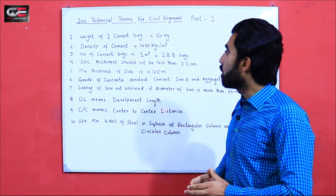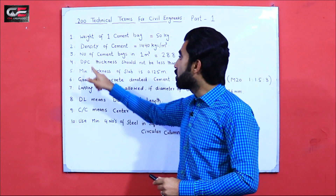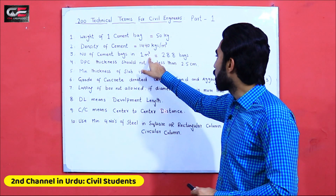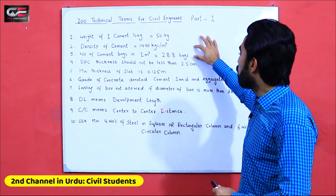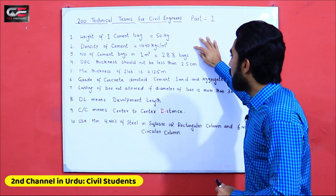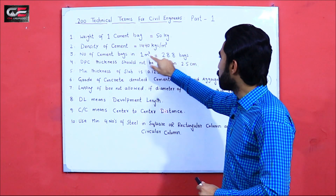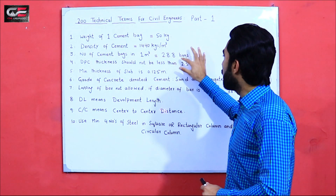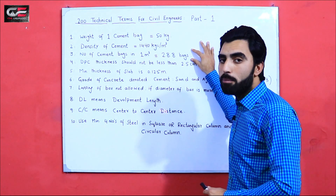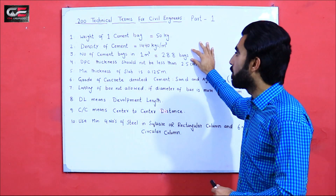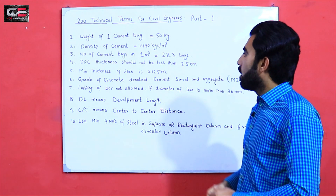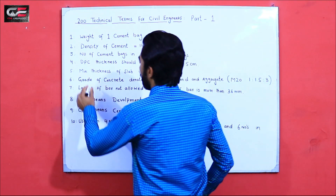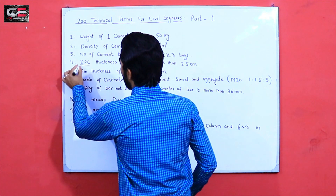The third term is the number of cement bags in one meter cube. We have 28.8 numbers of cement bags required in one meter cube.